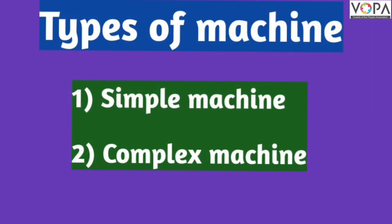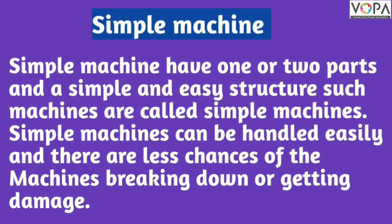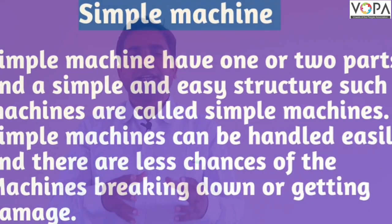Hello students and parents. We understood what a machine is. Now there are two types of machine: one is simple machine and the other is complex machine. A simple machine is made up of one or two parts and has a simple and easy structure. There is less chance of it breaking down and getting damaged.